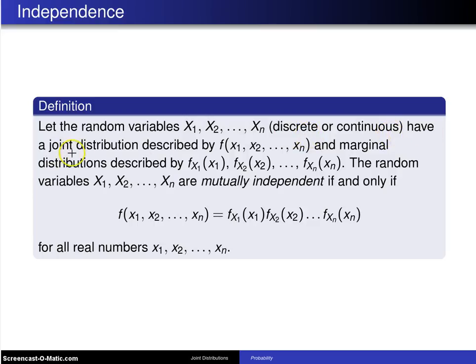have a joint distribution that is described by the probability mass function or probability density function f of x1, x2, up to xn, and marginal distributions described by fx1 of x1, fx2 of x2, up to fxn of xn.